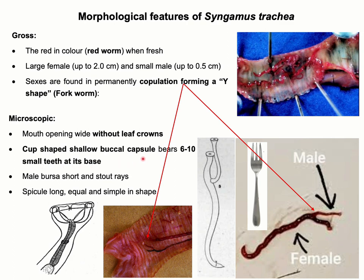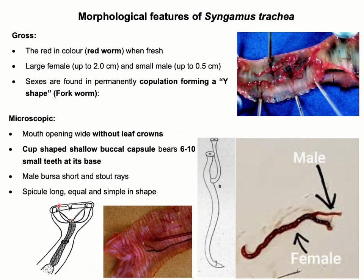Microscopic features of this parasite are also very typical. It has a cup-shaped shallow buccal capsule, and at the base of the buccal capsule there are five pairs of small teeth. There is no leaf crown at the mouth opening, and the male parasite has a small bursa with stout bursal rays. The spicules are long and equal in size.